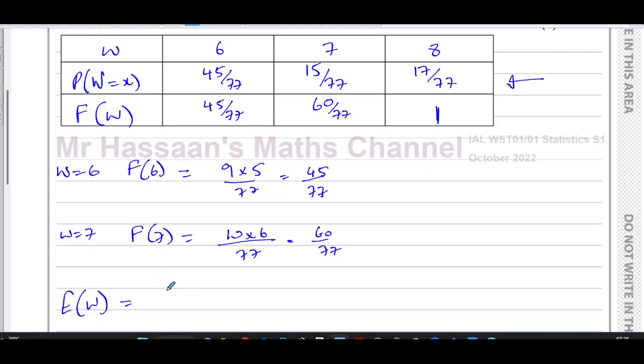So here for finding the E(W), you're going to do 6 times 45 over 77, plus 7 times 15 over 77, plus 8 times 17 over 77.